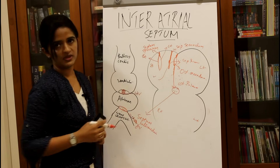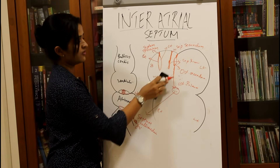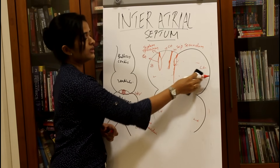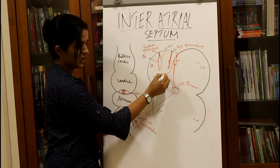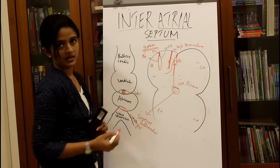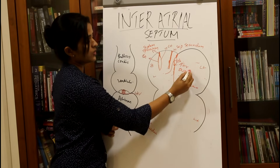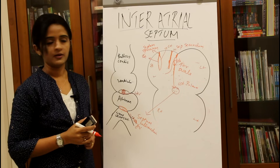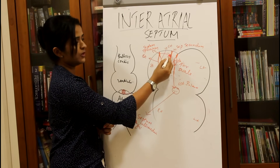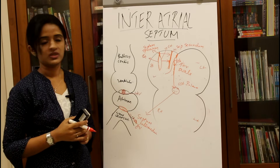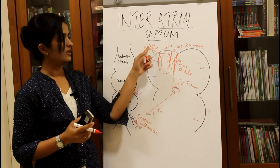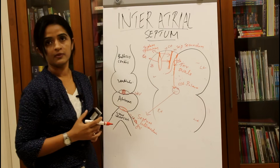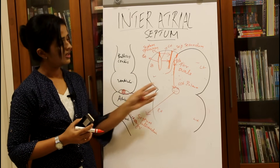Once the septum secundum crosses the lower limit of ostium secundum, the oblique opening now formed is renamed the foramen ovale. Foramen ovale is essentially the ostium secundum overlapped by the septum secundum. Along with septum secundum, the septum spurium and the left sinus valve also get fused. Compared to septum primum, the septum secundum is more rigid, while the septum primum acts like a flap valve.